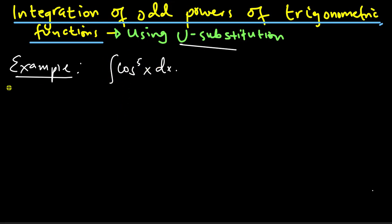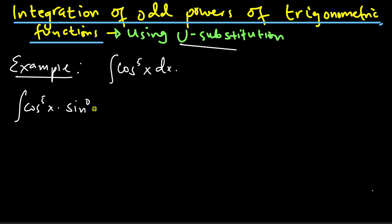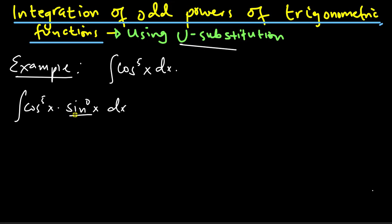If you take a look at this example, here we have the integral of cos to power 5x. Notice it has an odd power, the power of 5. Now the way that I'm going to apply u-sub here is to first write this again as the integral of cos to power 5x, but then I'm going to add another term — sin to power 0x — and then dx. From indices, we know that any number to power 0 is always 1, so this does not change anything. But the reason I'm putting this here is because I actually want to let u equal to sin x, so that I have a function and a derivative.